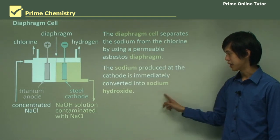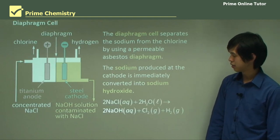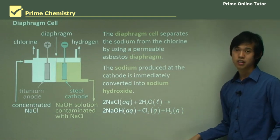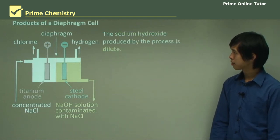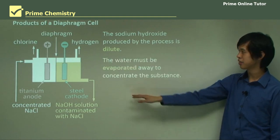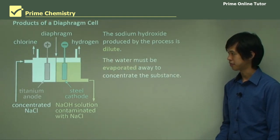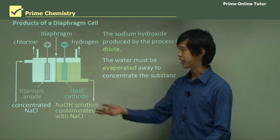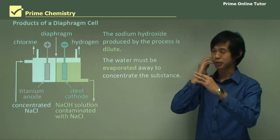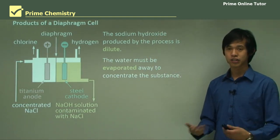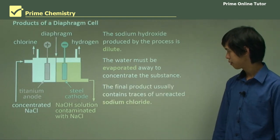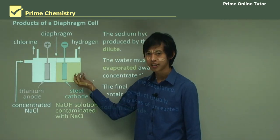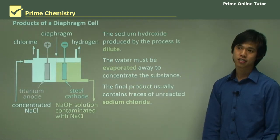The sodium produced at the cathode is immediately converted into sodium hydroxide. The overall equation is: 2NaCl + 2H₂O → 2NaOH + Cl₂ + H₂. The products are the same for all three processes. However, the sodium hydroxide produced is dilute and the water must be evaporated away to concentrate it. The final product usually contains traces of unreacted sodium chloride, because some chloride ions can drift across the membrane and contaminate the sodium hydroxide.